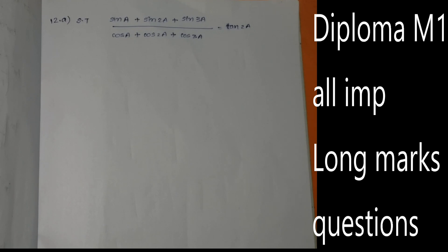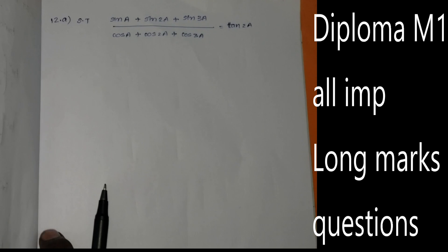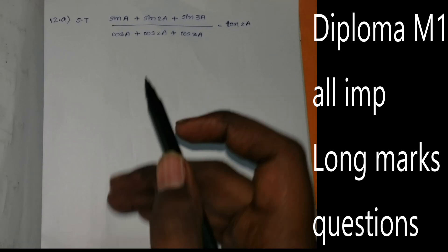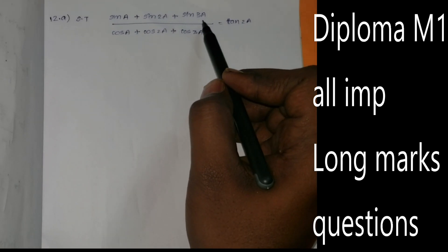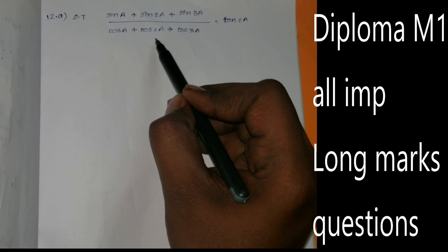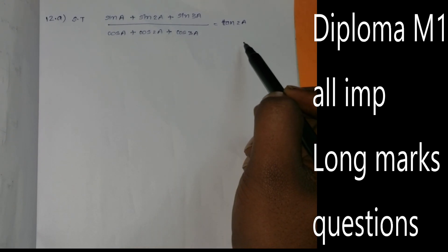We will talk about the trigonometry involved in this question. The problem is to prove that sin A plus sin 2A plus sin 3A divided by cos A plus cos 2A plus cos 3A is equal to tan 2A.